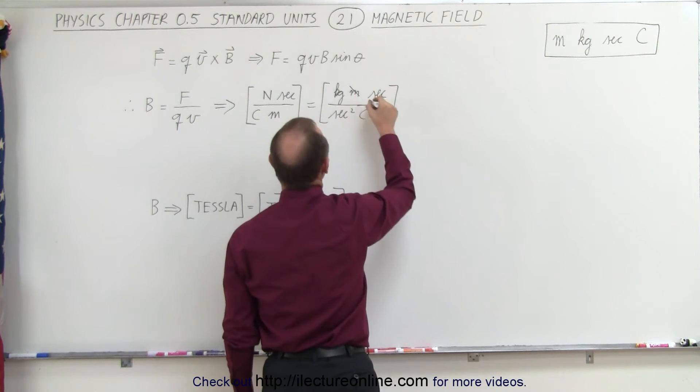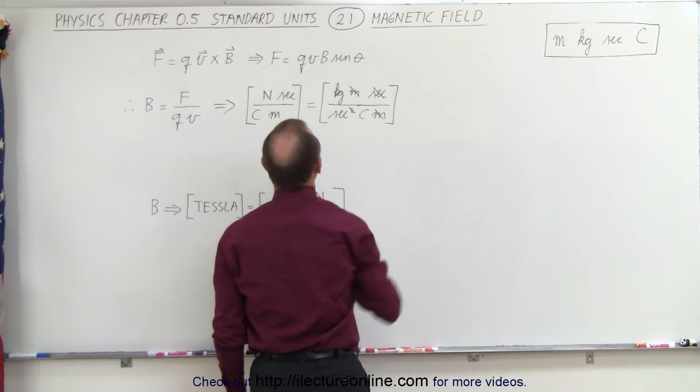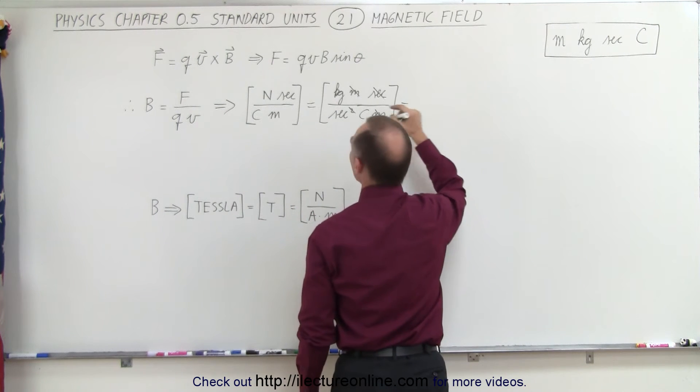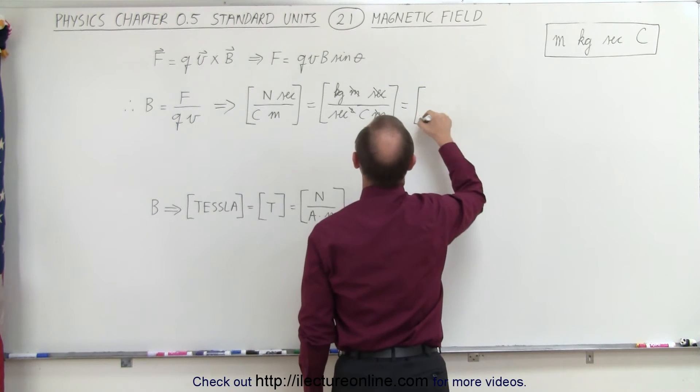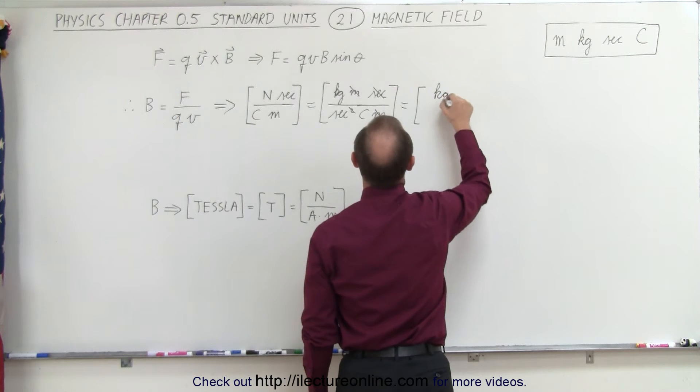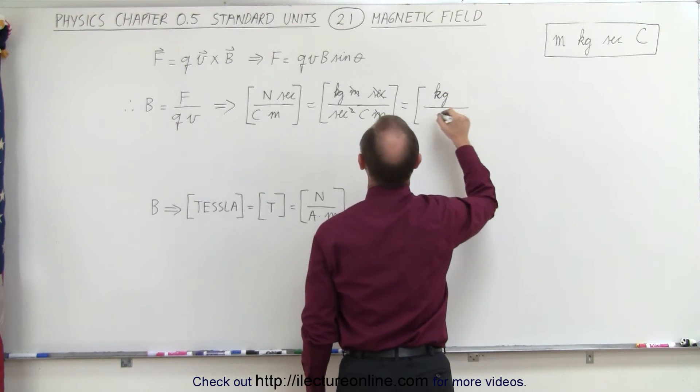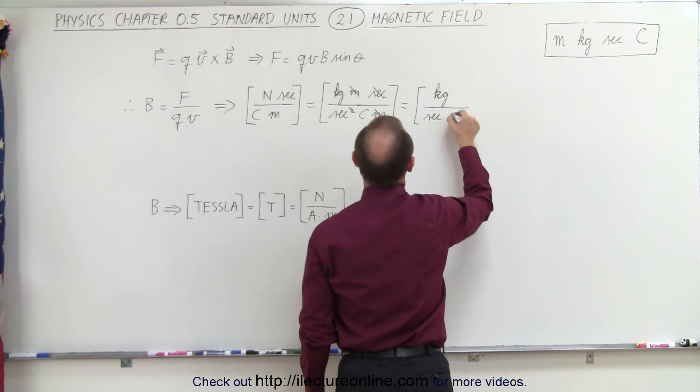Notice that the meters cancel out and one of the second cancels out, which means that the units for the magnetic field is going to be kilograms divided by seconds divided by coulombs.